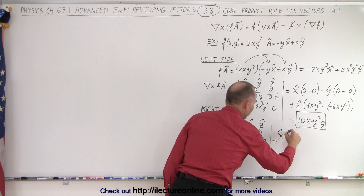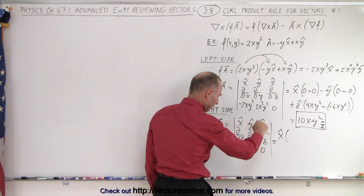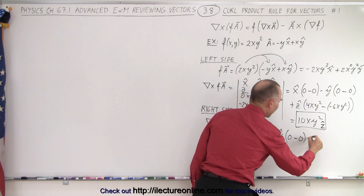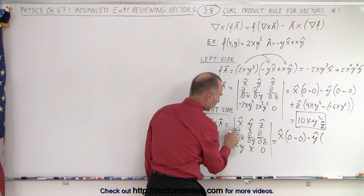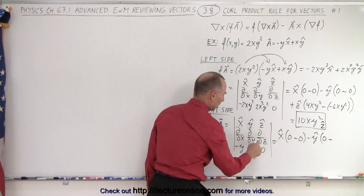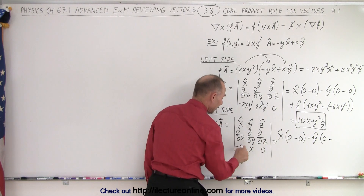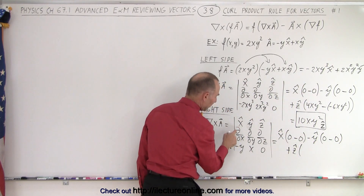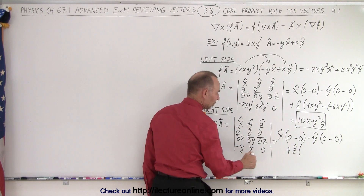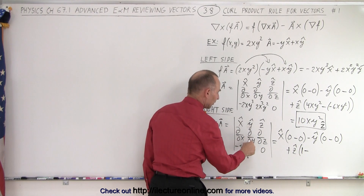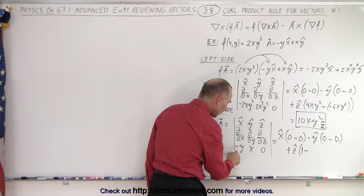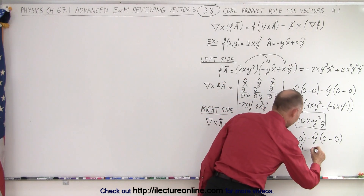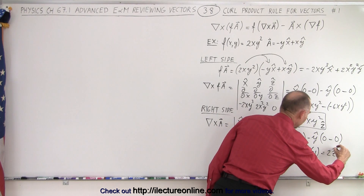Evaluating curl(a): the x unit vector term gives 0, the y unit vector term gives 0. For the z unit vector, we have the partial of x with respect to x, which is 1, minus the partial of minus y with respect to y, which is minus 1. So 1 minus (minus 1) equals 2. Therefore curl(a) equals 2 in the z direction.